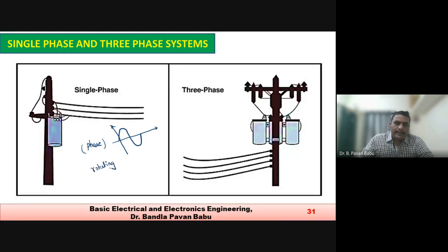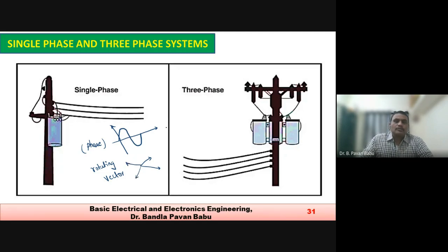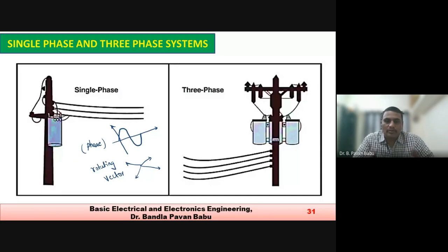The magnitude never remains the same for a rotating vector. That is why when operating with DC we never call it a phase — there is no concept of single phase DC or three phase DC. The term phase is used only for AC, either single phase or three phase.